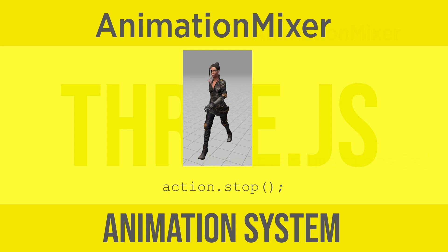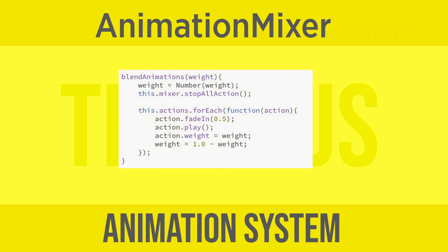When you blend in animations, you layer them up in the mixer by playing more than one. You can easily set the weight of an action using the weight property. The mixer will use this value to determine how much of an action is used in calculating the position, orientation, and scale at any given time.